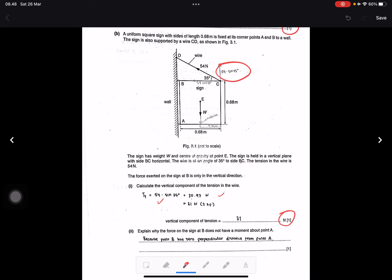Question 3B(ii): Explain why the force on the sign at B does not have a moment about point A. Because point B has zero perpendicular distance from point A. Yes correct, point B is zero distance from A. That's correct.